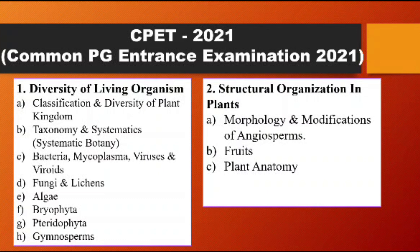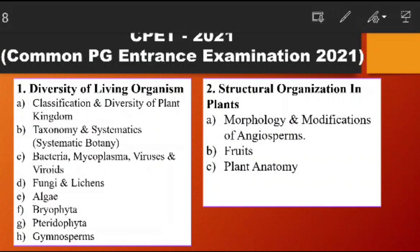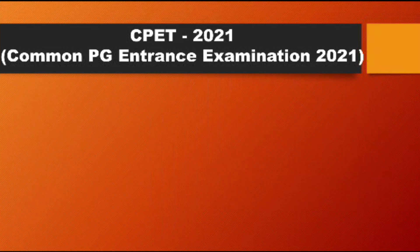The second topic is Structural Organization in Plants. This covers morphology and modification of angiosperms — root, stem, leaf, flower, and fruit. In plant anatomy, you will study all tissue systems, monocot and dicot plants in stem and leaf, which is very important. Secondary growth and the vascular cambium are also important topics from which questions are frequently asked.